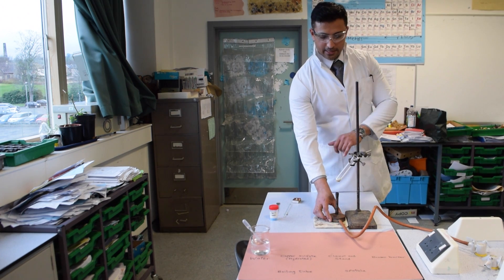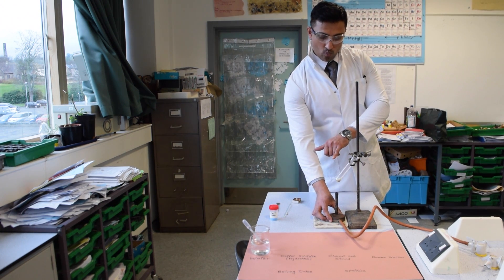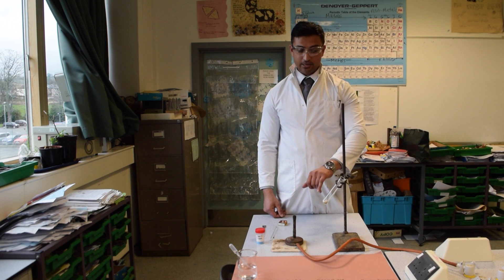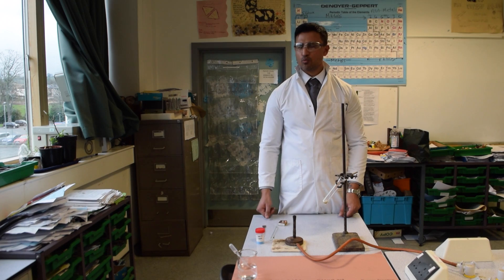Now the copper sulfate has gone white, so move the Bunsen burner away and turn it off. Leave it to cool for about three minutes. While you're doing that, you can draw the apparatus and show what you've done.